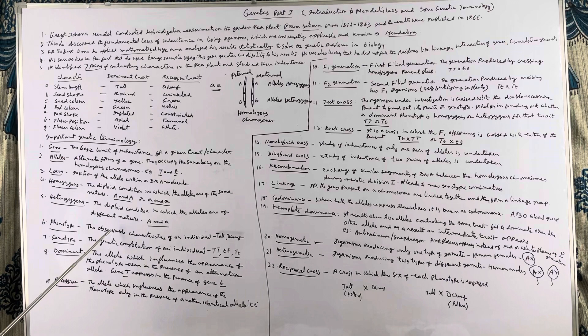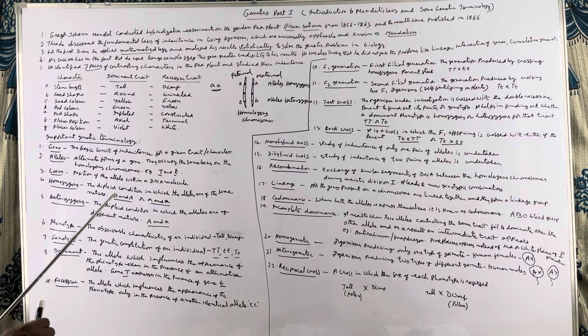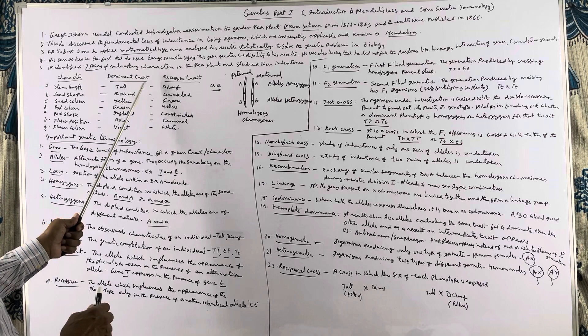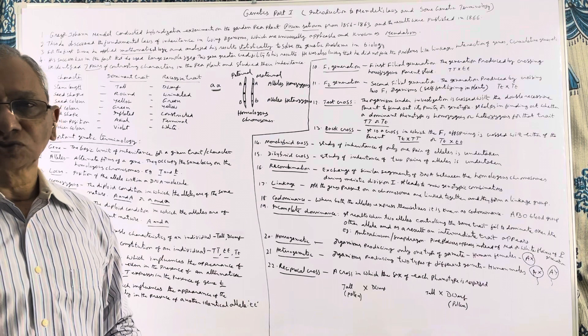Phenotype means the observable traits or characteristics in an individual — the physical or external appearance. Suppose you take a plant; just by seeing it you can say it is a tall plant or a dwarf plant. That is the phenotype. If you distinguish a particular trait just by observation, it is known as a phenotypic trait.